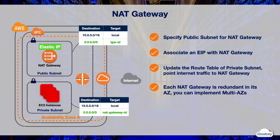Each NAT gateway is created in a specific availability zone and implemented with redundancy in that zone. If you have resources in multiple availability zones and they share one NAT gateway, and if the NAT gateway's availability zone is down, resources in the other availability zones lose internet access. To create an availability zone independent architecture, create a NAT gateway in each availability zone, and configure your routing to ensure that resources use the NAT gateway in the same availability zone.